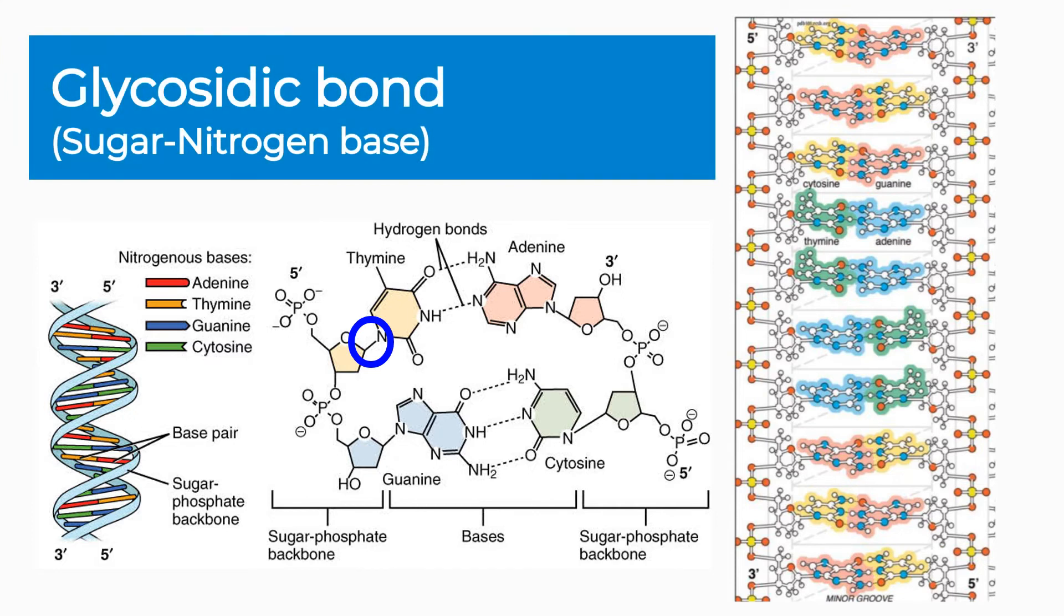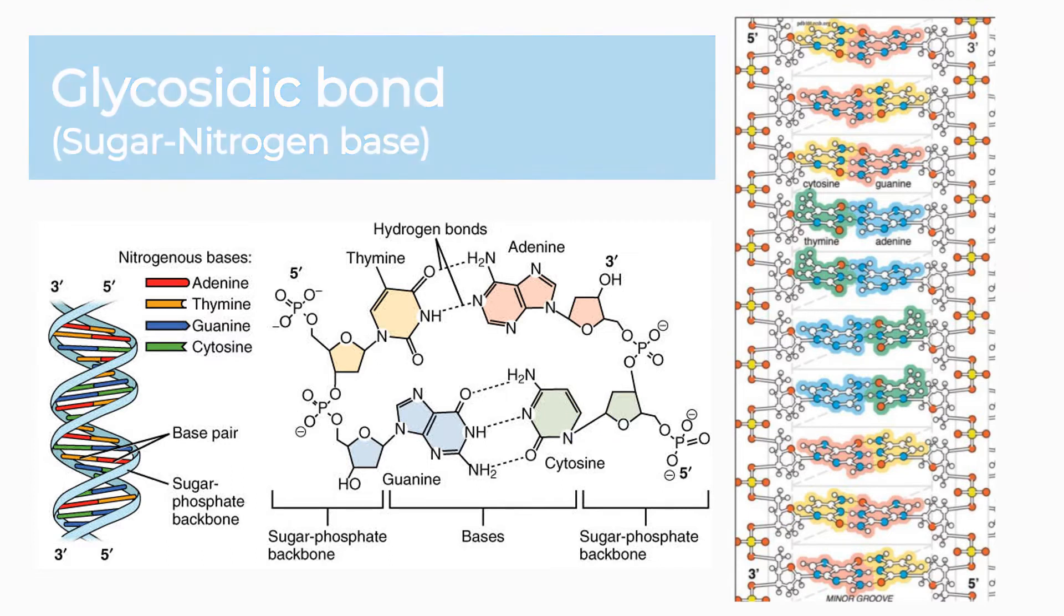The other important bond in DNA is called a glycosidic bond, which connects the one prime carbon with the nitrogen base. These bonds are also commonly called glycosidic linkages.